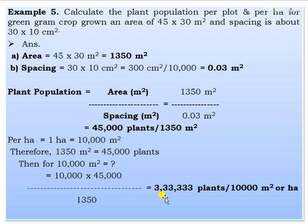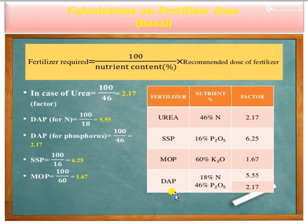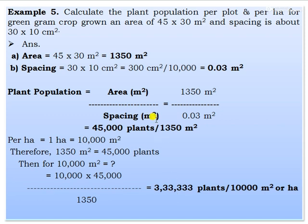For green gram: grown area 45 by 30 m, spacing 30 by 10 cm. Total area = 1,350 m², spacing = 0.03 m². Plant population = 1,350 ÷ 0.03 = 40,000 plants per 1,350 m². For 1 hectare, this gives 33,333 plants per hectare.